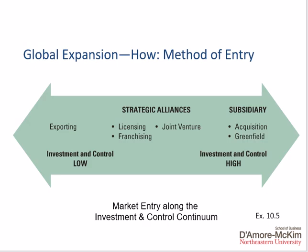The final issue involves the method of expansion — how the firm executes its strategy. Along this spectrum there are variations in the level of investment required and the amount of control the firm has. Exporting offers the lowest and cheapest way to expand geographically but also the lowest level of control, where the firm sells its goods in overseas markets through exporters and distributors but has little control over what happens once the product leaves its warehouses.